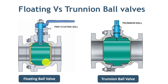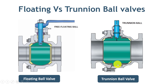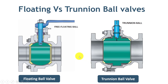On the other hand, in a trunnion-mounted valve, the ball will remain in position irrespective of the fluid pressure. The valve seats are designed so they always stay in contact with the ball to provide the required sealing. You can open this valve more easily compared to a floating type, but you have to trade off some of the benefits of high sealing.